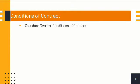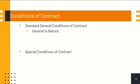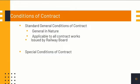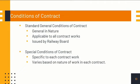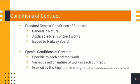Conditions of contract has two parts: standard general conditions of contract and special conditions of contract. The conditions in the standard general part are general in nature and applicable to all contract works; these are issued by the railway board. Special conditions of contract are specific to each contract work, varying based on the nature of work, and are framed by the engineer in charge, exercising care for legal and financial repercussions.